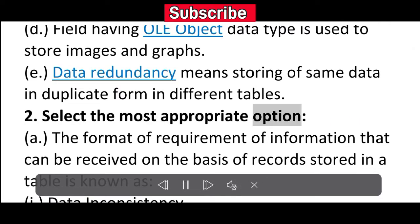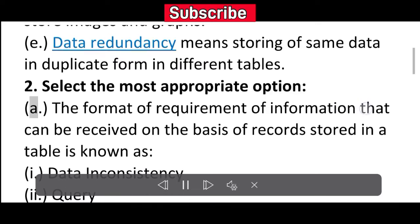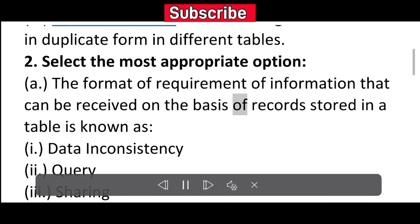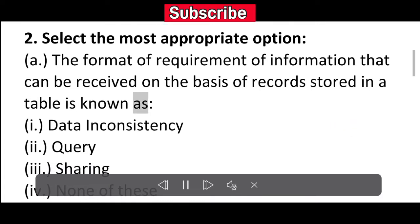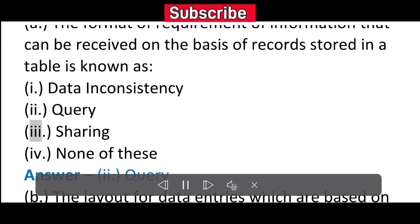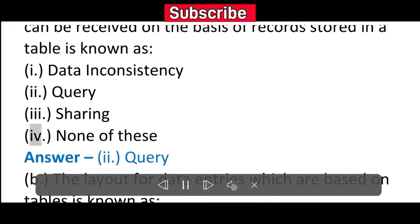2. Select the most appropriate option: A. The format of requirement of information that can be received on the basis of records stored in a table is known as: (i) Data inconsistency (ii) Query (iii) Sharing (iv) None of these. Answer: (ii) Query.